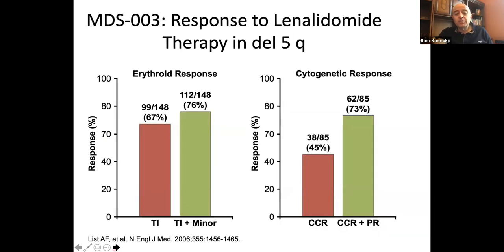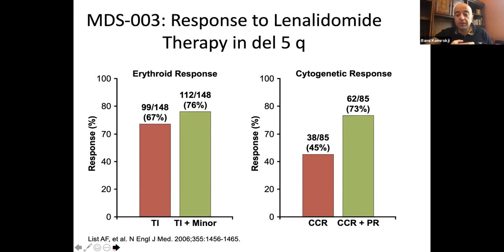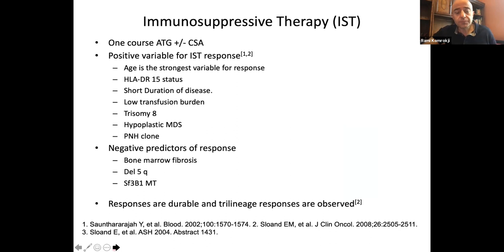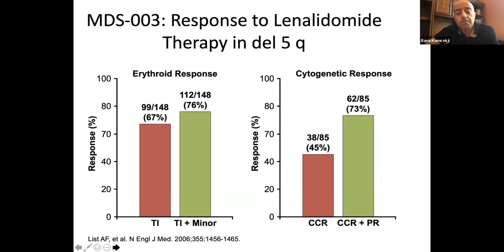The other treatment available is lenalidomide, or Revlimid. This is FDA-approved for a subset of patients with an abnormality in chromosome five called deletion 5Q, where part of chromosome five gets chipped out. Lenalidomide is considered the standard of care in this group — it leads to patients becoming transfusion-independent in almost 70% of cases, with half of patients showing a cytogenetic response where deletion 5Q is no longer seen, and responses are typically very durable. We can also use Revlimid in non-deletion 5Q patients with anemia, but the major use is really in del 5Q.